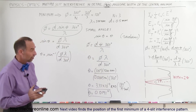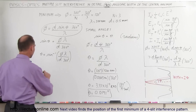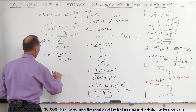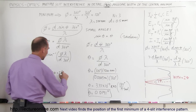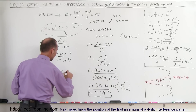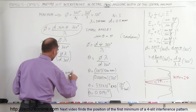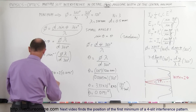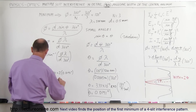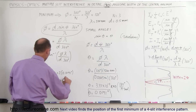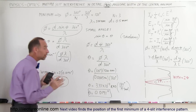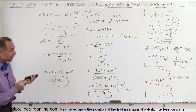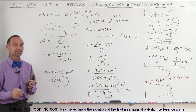Notice that the width of the central maximum will be 2 theta. So the width equals 2 times 0.0191 degrees, which gives a width equal to 0.0382 degrees. That is the angular size of the central maximum, and that's how we do that.